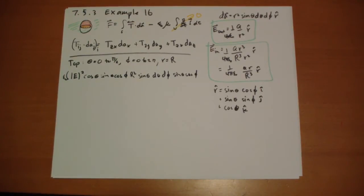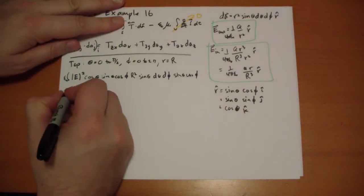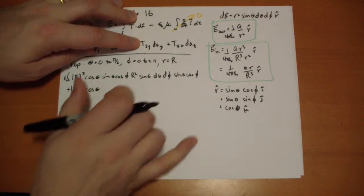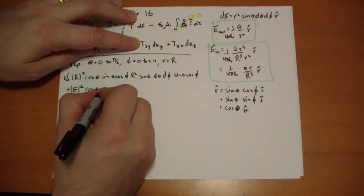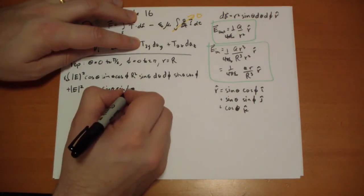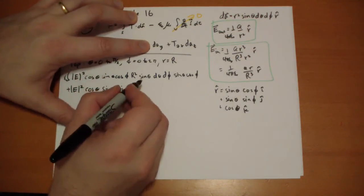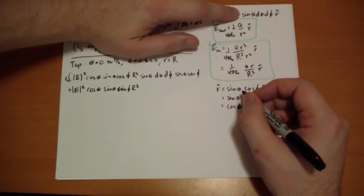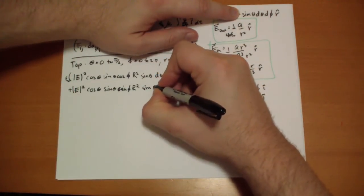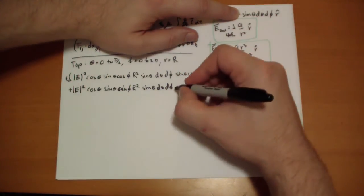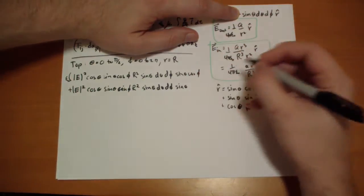The next one is also going to have an E squared. T_zy. So now we can take the z component and the y component. So that's cosine theta, sine theta, sine phi. And that's the dA_y component. So that's r squared. And then we have sine theta, d theta, d phi, and then these two guys. Sine theta, sine phi.